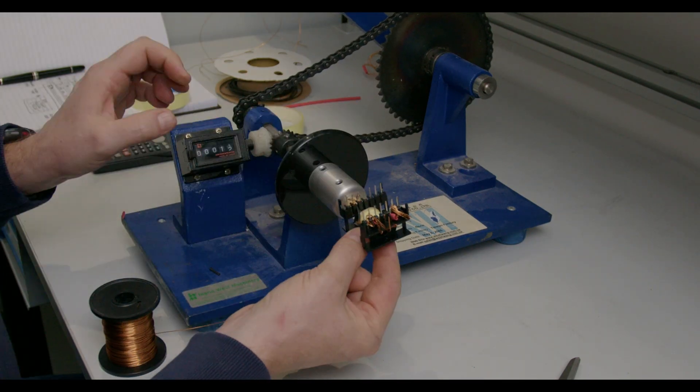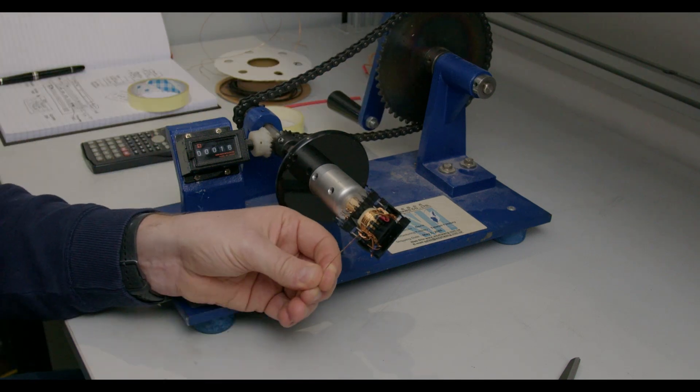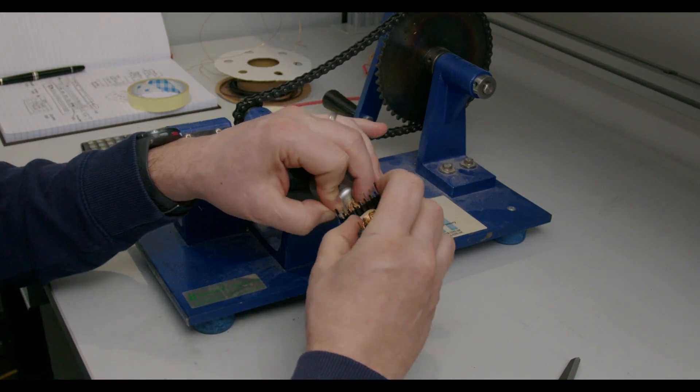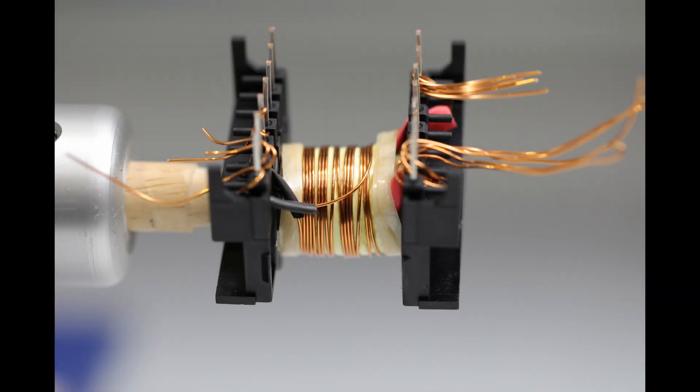We now wind the remaining 16 primary turns of 0.5 millimeter wire. Starting on pin two and finishing on pin one, we try to spread the winding over the available width. It's not too bad.